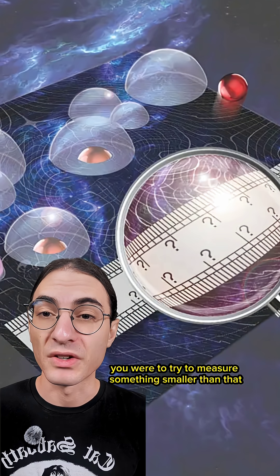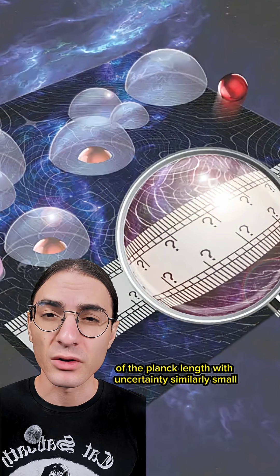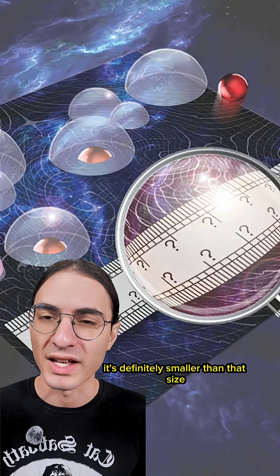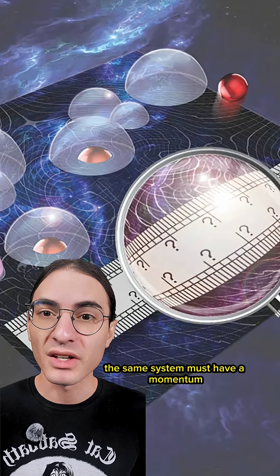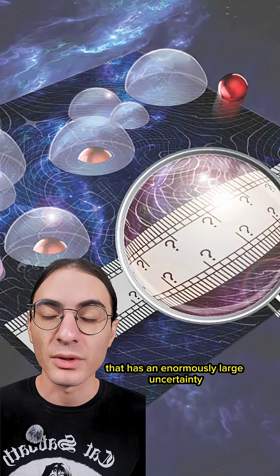So imagine you were to try to measure something smaller than the Planck length, with uncertainty similarly small, so that you can confirm it's definitely smaller than that size. Well, then the same system must have a momentum that has an enormously large uncertainty.